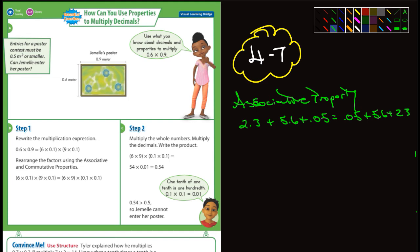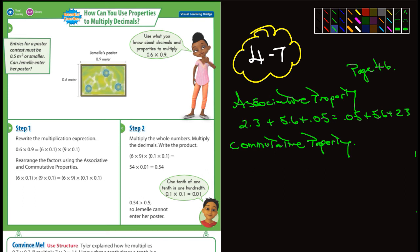So you can change the order of the numbers and you'll get the same answer. The other one we talked about was the commutative property. That's supposed to be two M's there. These are on page 46.